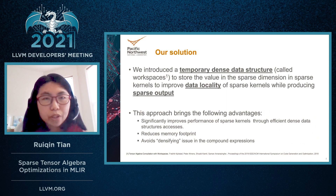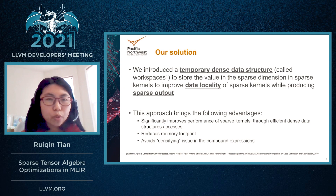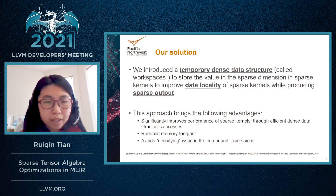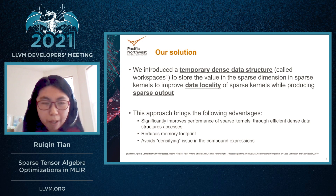As our solution, we introduce a temporary dense data structure called the workspace, to store values in the sparse dimension in sparse kernels. This improves data locality while producing sparse output. The workspace significantly improves the performance of sparse kernels through efficient dense data structure accesses, reduces memory footprint, and by generating sparse output, it avoids the densification issue in compound expressions.